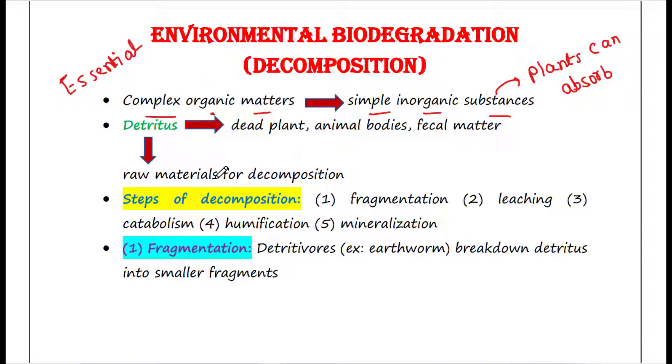Dead plants and animal bodies as well as fecal matter are called detritus, which are the raw materials for decomposition. Let's talk about the steps of decomposition. There are five steps of this decomposition.